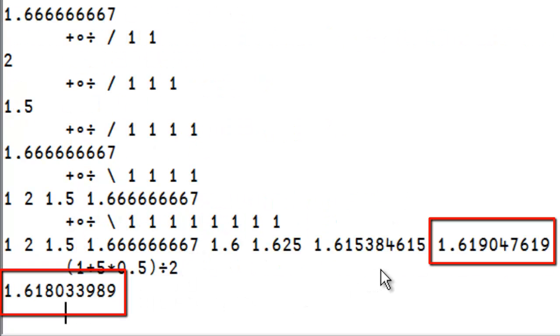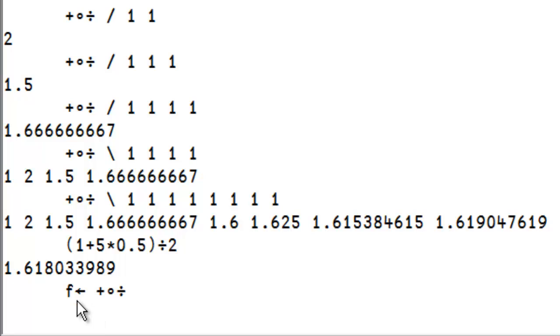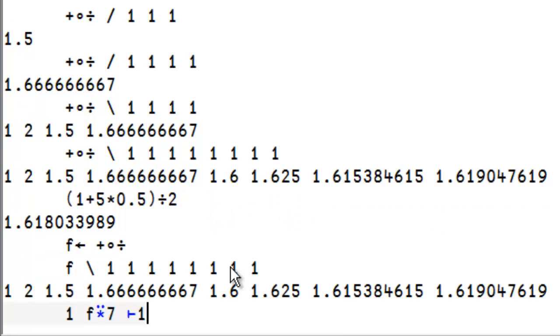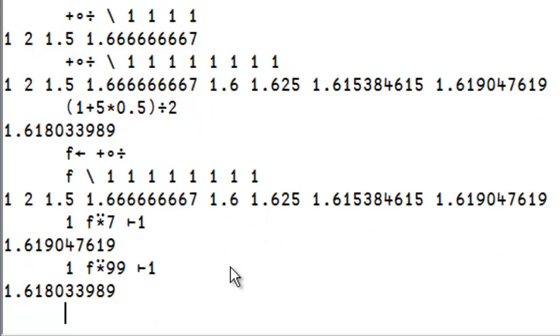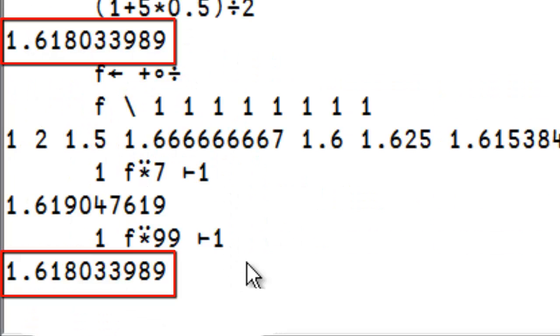So, the two numbers here are getting closer and closer. If I define f to be this function, I can apply f and I get the same result. I can apply f seven times and I get the result. I can apply it 99 times and I get the result identical.